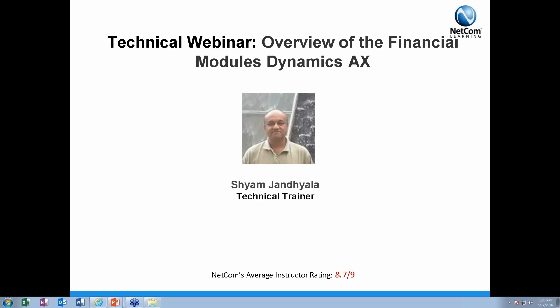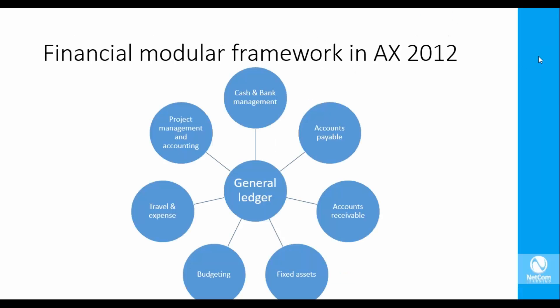If we look at how the financial modules are laid out in AX, the general ledger is central to all the financial modules, which basically means that all financial modules and even certain non-financial modules in AX feed into the general ledger. They generate data relevant to their own functionality and also generate data relevant to the financial books of the enterprise, and they post financial information into the general ledger module.